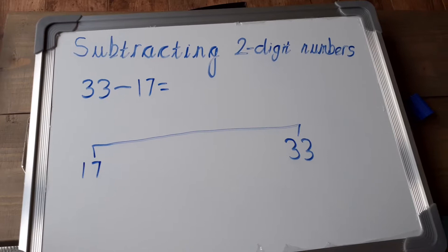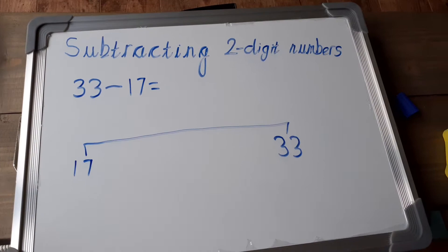So we've got a sum here, 33 take away 17, and what we're going to do is use a number line to help us work out the answer.